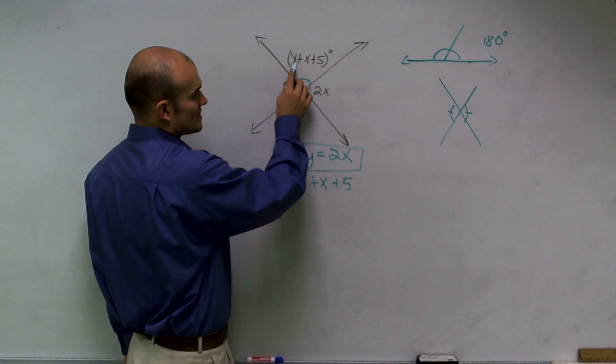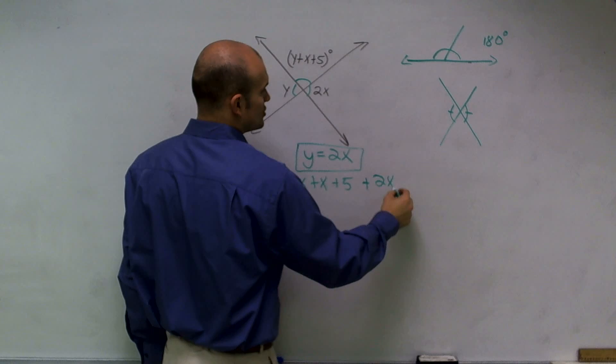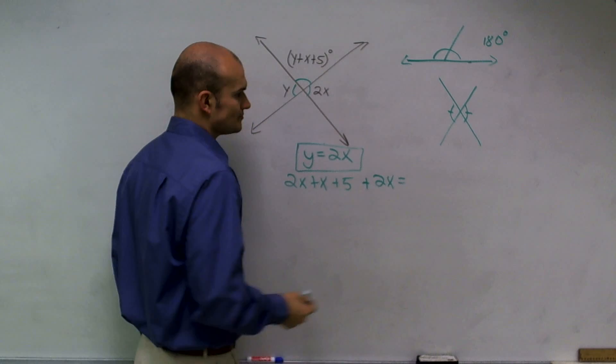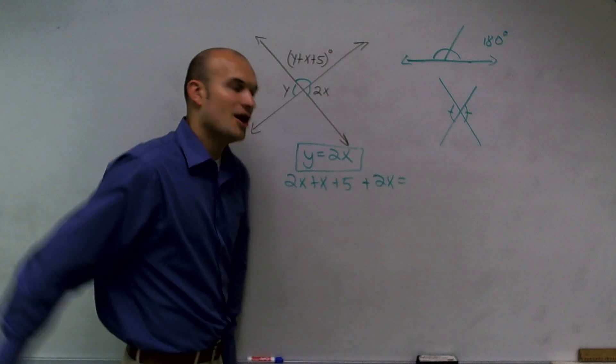So 2x, which is your y, plus x plus 5, plus another 2x equals 180 degrees.